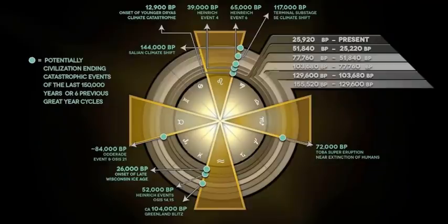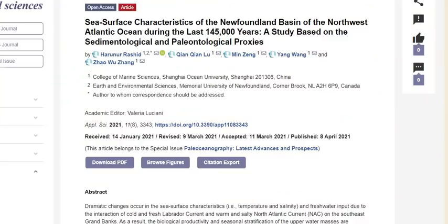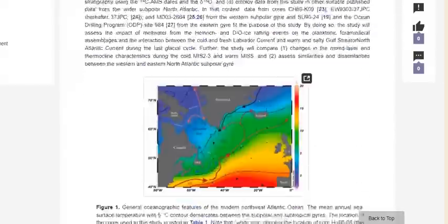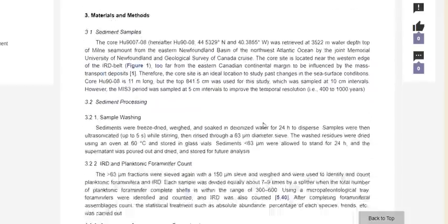Foraminifera are one of the most important ecological indicators. Without them, we would have no basis for claiming that you are now living on the next flexure point of the next cosmic catastrophe — and the data from this paper actually shows it. So we're going to dive into it before we end the video.